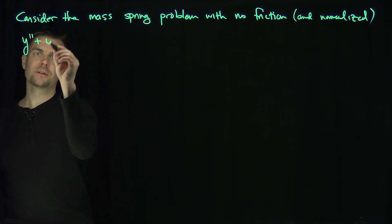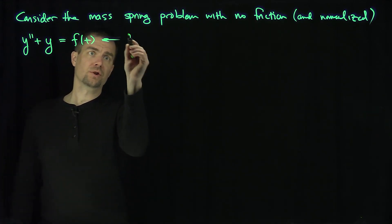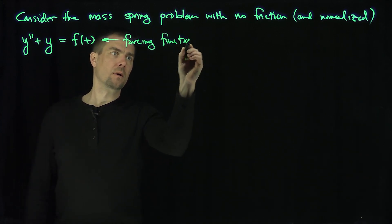It's just y double prime. It's just this harmonic oscillator. y double prime plus y is equal to some function f of t, some forcing function. There's my forcing function.